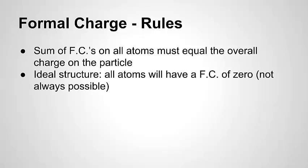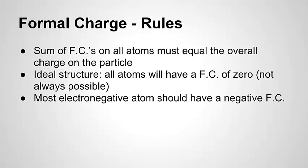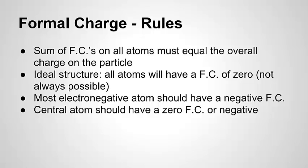Second, in an ideal or the best possible structure, all of the atoms will have a formal charge of zero. Now it's not always possible, so sometimes you're going to have to make a judgment based on the best possible formal charges. The most electronegative atom in your structure should have a negative formal charge — if it can't be zero, then the most electronegative atom should be negative. The central atom, if possible, should have a zero formal charge, or negative if it can't be zero.